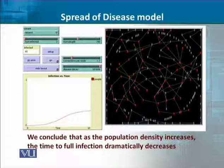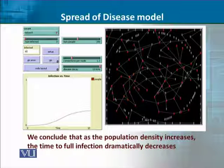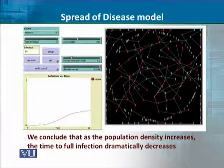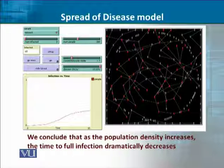This is the model. On the top you can see there is a variant — yeh kaun sa wala — yeh network-based model hain, infected ka number hain. Phir uske baad neeche aap dekhiye ke kis tarah se disease ho rahi hain. Aap dekhte hain ke population density agar increase hoti hain, to jitni der mein full infection hoti hain, woh bhi increase hoti hain — yaani phailne mein zyada waqt lagta hain.